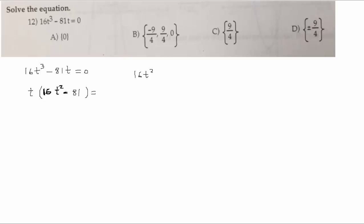So how would I factor this now, anybody? 16t squared minus 81. Is that factorable? Yes. How? Difference of squares. Difference of squares. A squared minus B squared would be A minus B times A plus B. So this would be your A. What is your A in this case?